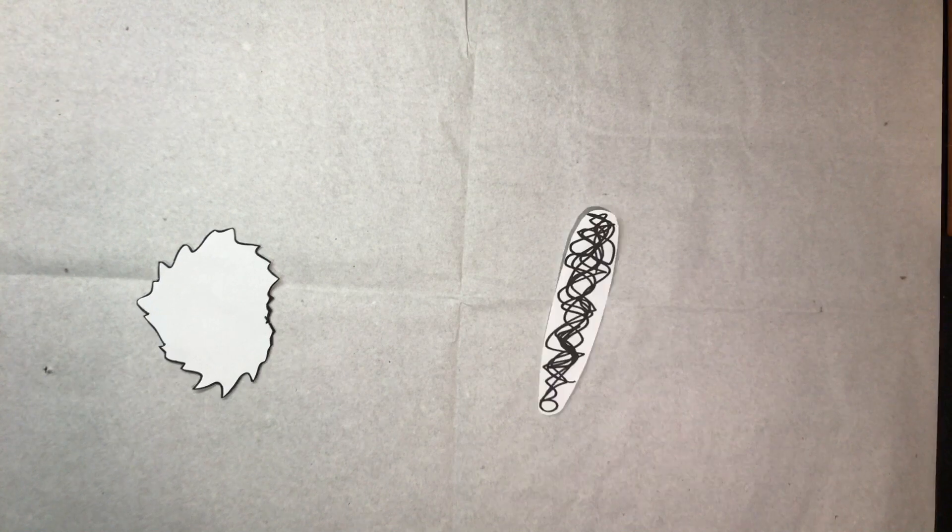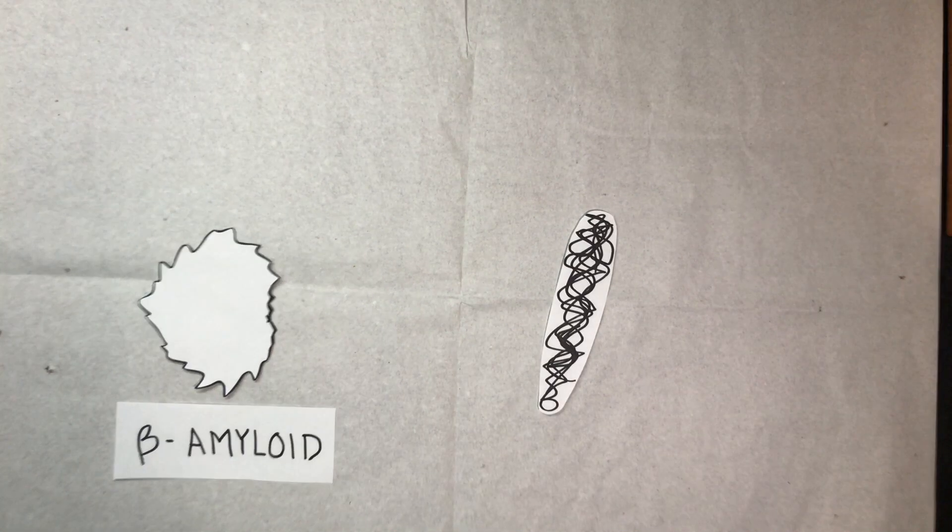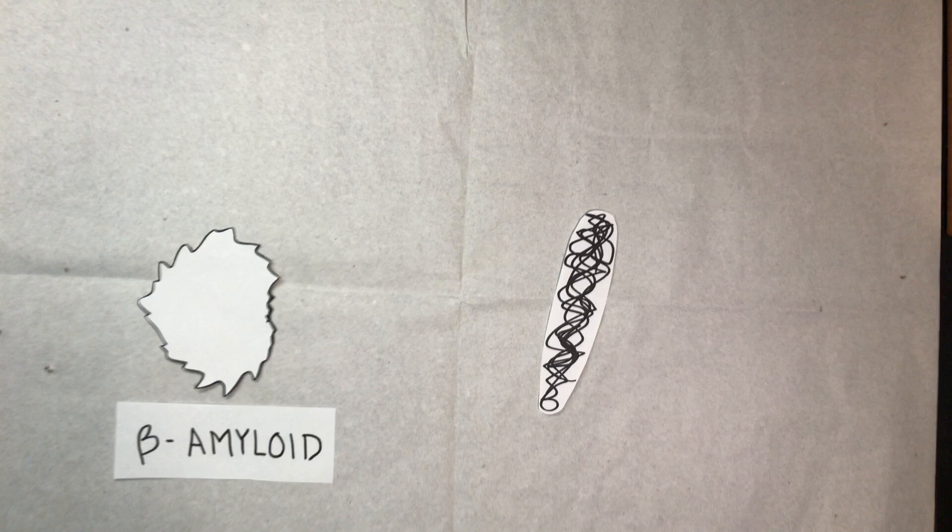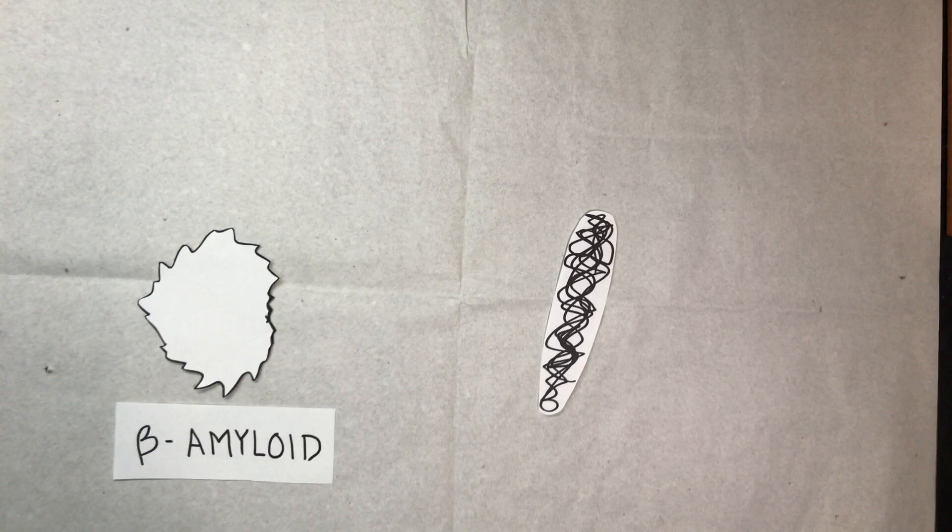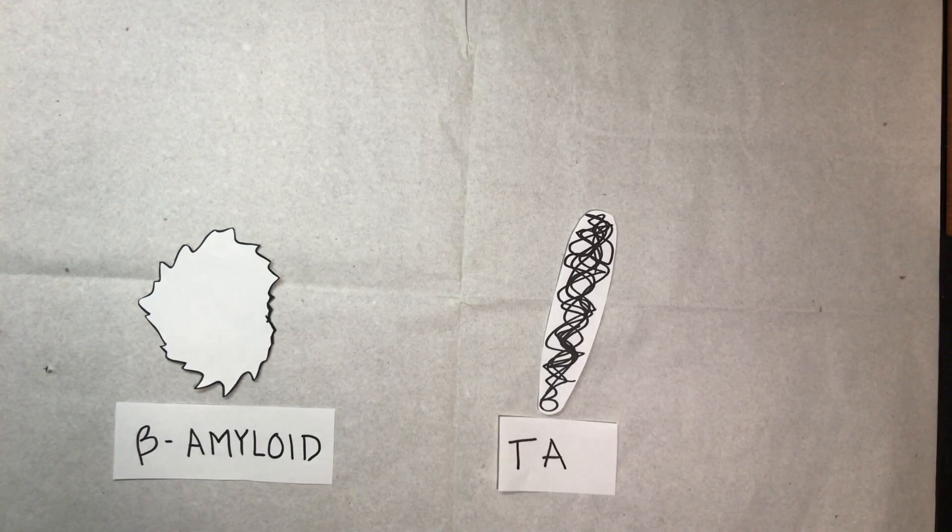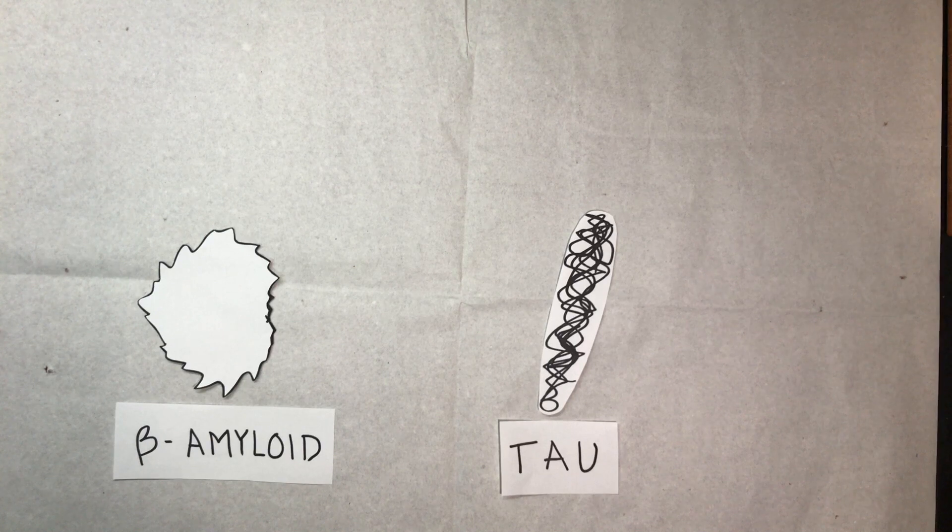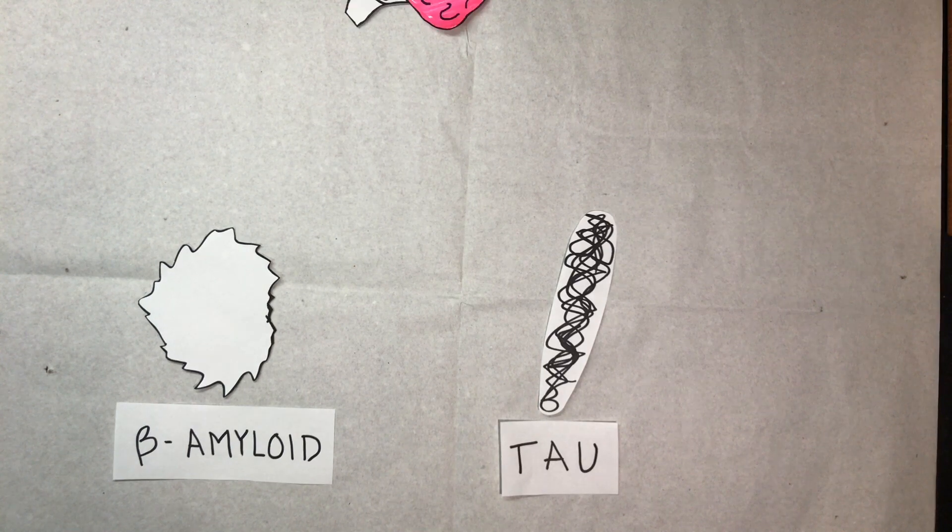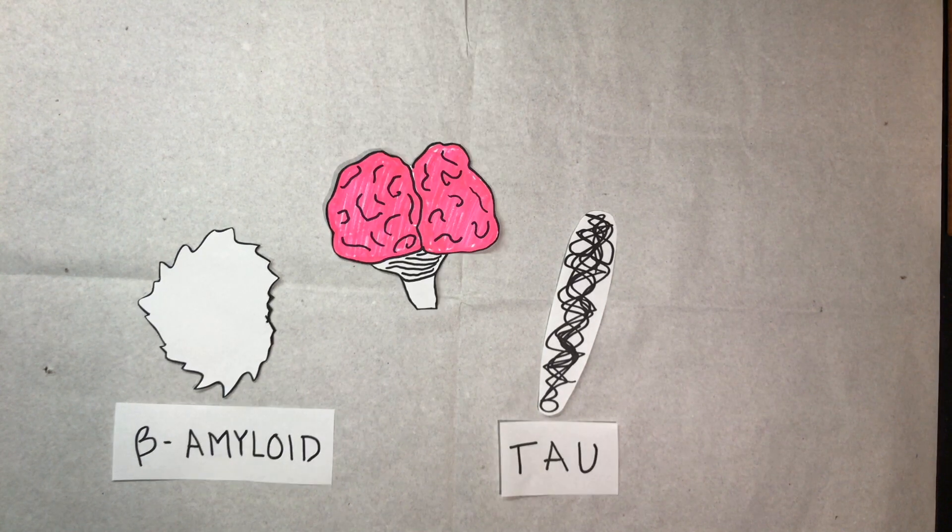The two changes caused by Alzheimer's are plaques and tangles in the neural tissue of the brain. Plaques are formed when the protein beta amyloid builds up and deposits in spaces between neurons. Tangles are caused by the twisted fibers of another protein called tau that form within neurons. Both plaques and tangles form naturally as a person ages, but they are present in much higher numbers in people with Alzheimer's.